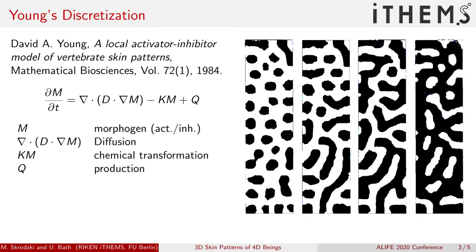In 1984, David Young discretized this model. He gave it a slightly different formulation, and this formulation by David Young, as you can see on the left hand side, actually enables us to use cellular automata to simulate these different patterns.